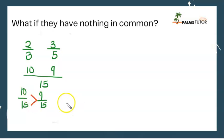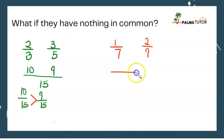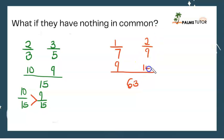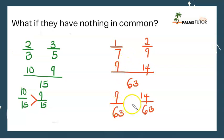Another example: 1 over 7 and 2 over 9. The LCM of 7 and 9 is 63. 63 divided by 7 is 9, and 9 times 1 is 9, giving 9 over 63. 63 divided by 9 is 7, and 7 times 2 is 14, giving 14 over 63. So 1 over 7 is lesser than 2 over 9. When comparing fractions with nothing in common, using the lowest common factor makes them comparable.